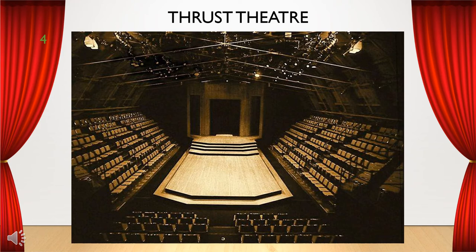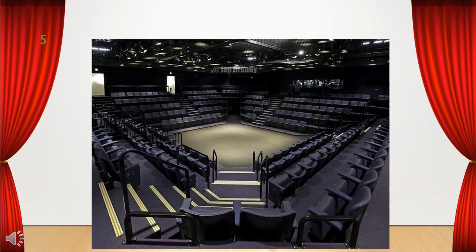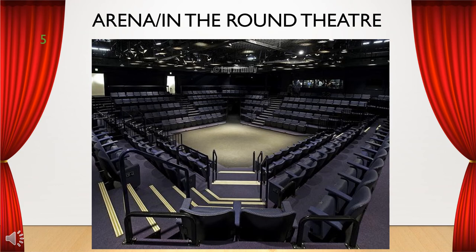Since we started with audience on one side and now have audience on three sides, where do you think the audience will sit in the next type of theater? If you guessed on all four sides, you were right. The next style of theater is the arena, or in-the-round theater. In this space, the house surrounds the stage on all four sides. Do you think it would be hard to act in a space like this? How would you make sure all of the audience members can understand you when some of them won't be able to see your face?